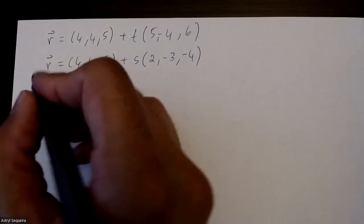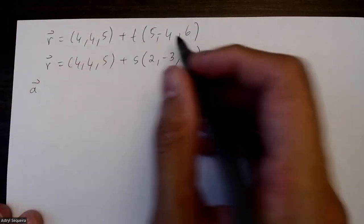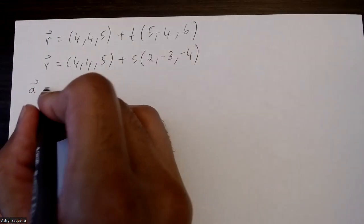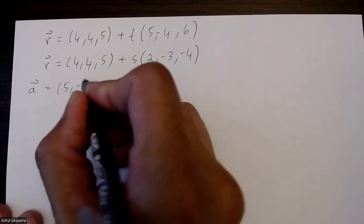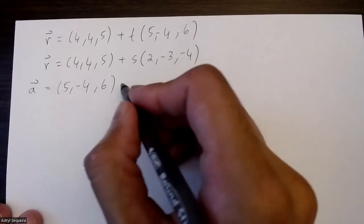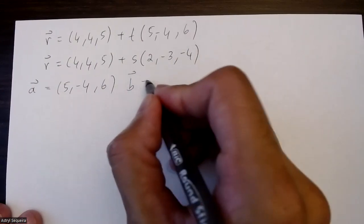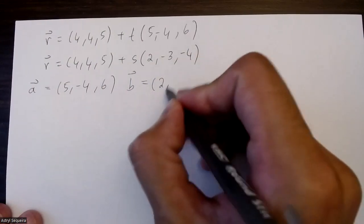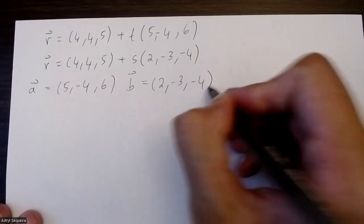So I know that I can use the direction vector of my first line as my first direction vector for this plane. Now I can use this second direction vector of the second line here as the second direction vector of my plane.